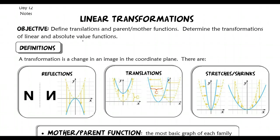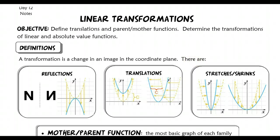I've got some pictures here of the different types of transformations that we can see in a coordinate plane. Basically, all that a transformation is is a change in an image in the coordinate plane. So you take an image, apply a transformation, and you get a new image. I'm going to pause and bring us over to a different screen.